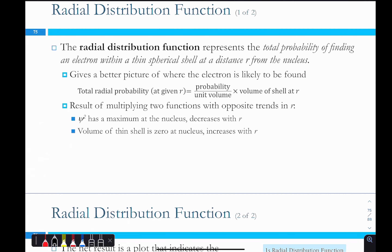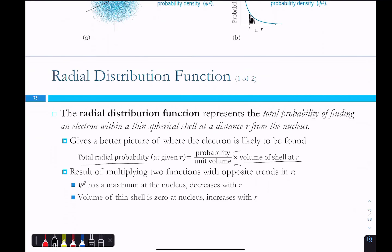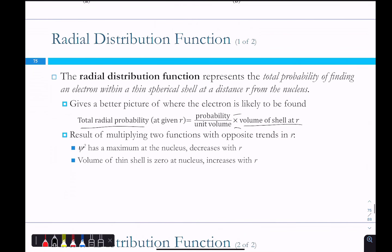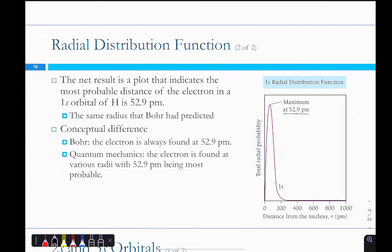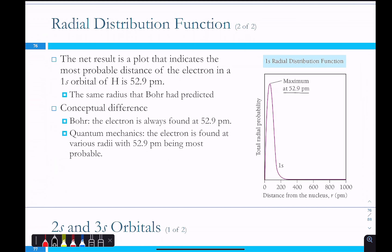The radial distribution function represents the total probability of finding an electron within a thin spherical shell at a distance r from the nucleus. It gives a better picture of where the electron is likely to be found: the total radial probability equals the probability density times the volume of the shell at r. This is essentially integrating from the center out to a radius. The maximum of the radial distribution function for hydrogen 1s is at 52.9 picometers — that's also the distance Bohr predicted. Beyond that maximum the probability decreases as you move farther away.